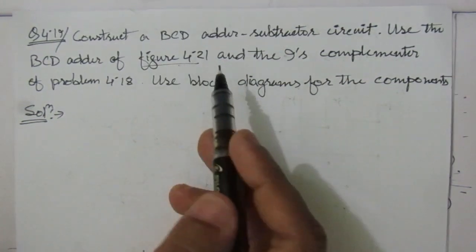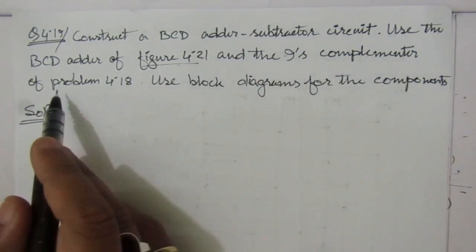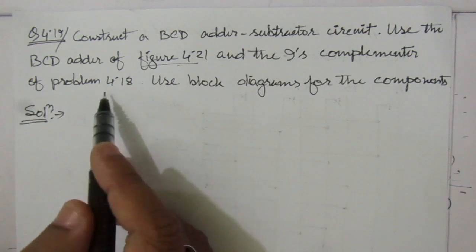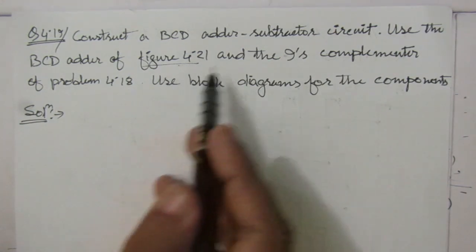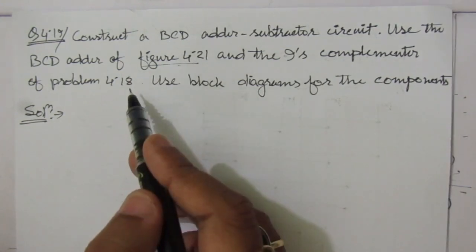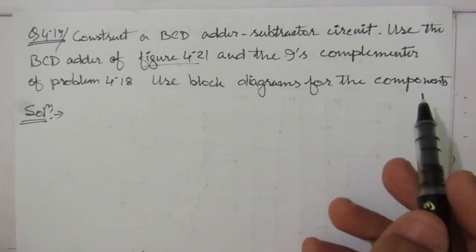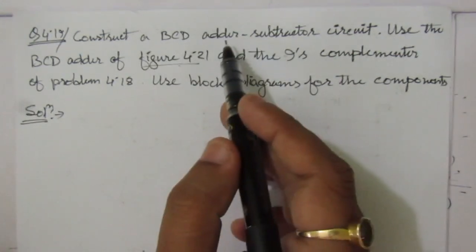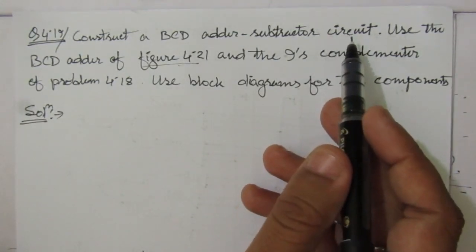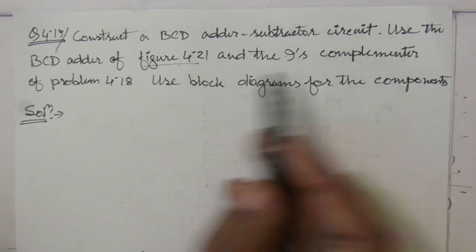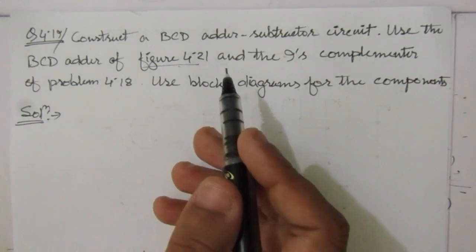We are told to use the 9th complementer from problem number 4.18, which is the previous problem where we designed a 9th complementer. We have to use these two circuits and use block diagrams for the components — that means whatever adder-subtractor circuit we design, we use the block diagrams of the 9th complementer and the BCD adder circuit of figure 4.21.